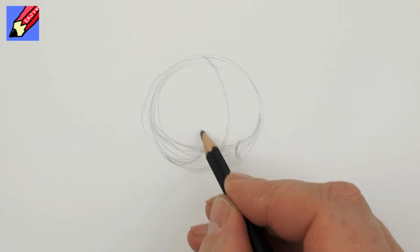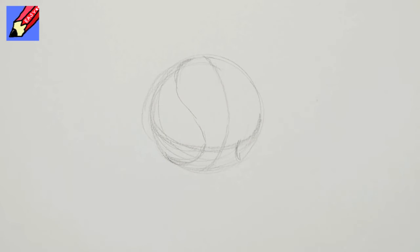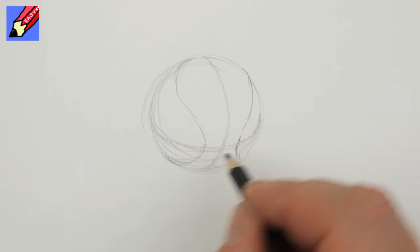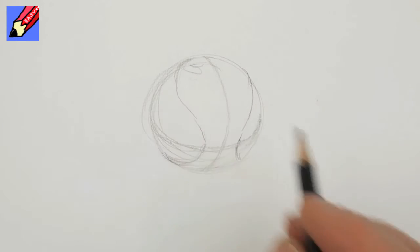This will then carry on and curve around there and kind of join up with the circumference there and this will then kind of join up with the circumference there and you're probably going to get something written on the side.